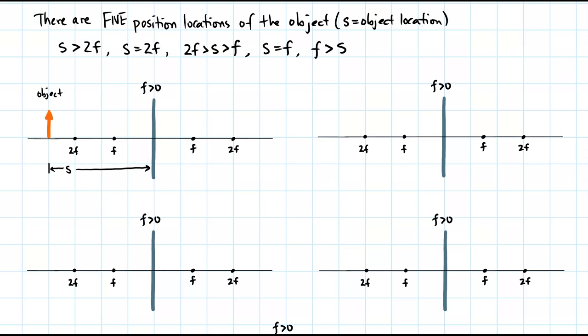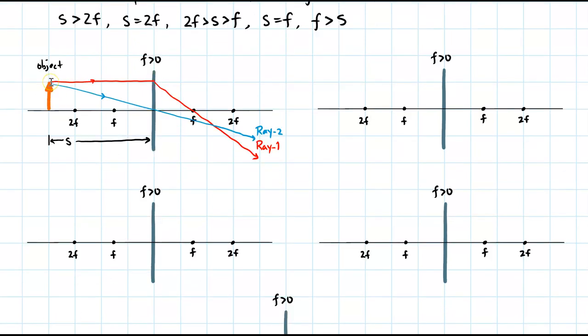The object in orange is shown with distance S from the lens to the object location. Ray number one in red goes from the tip of the arrow, parallel to the central axis, and refracts through the focal point. Ray number two in blue starts at the tip and goes through the focal point — you can already see the blue and red rays crossing.